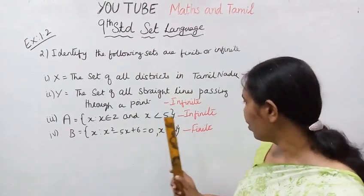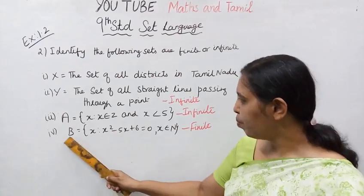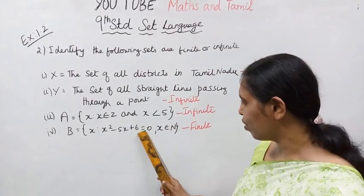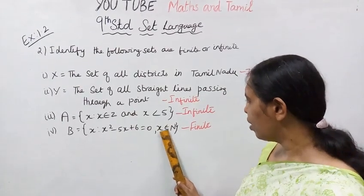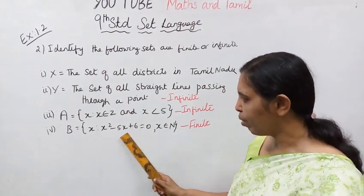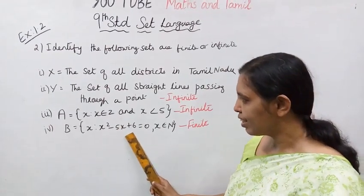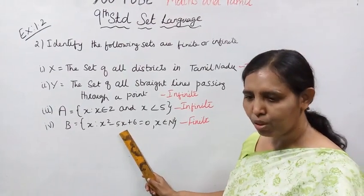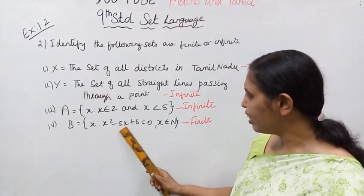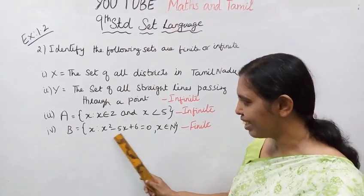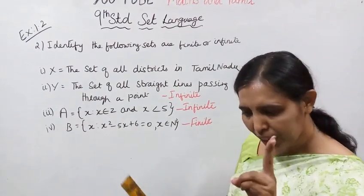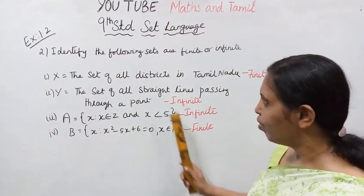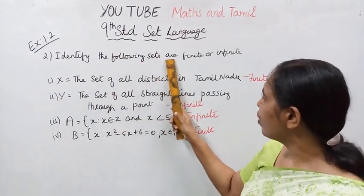Fourth: B = {x: x²-5x+6=0, x∈N}. Factoring: x²-5x+6 = (x-3)(x-2) = 0, so x=3 or x=2. Since there are two elements, the answer is finite.